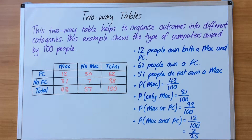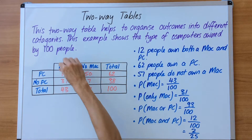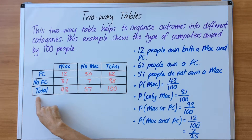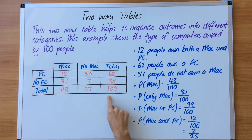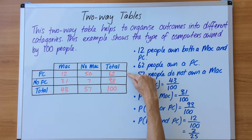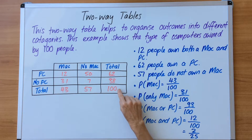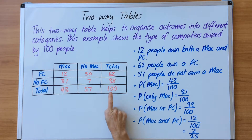We're now going to progress. This two-way table helps to organise outcomes into different categories. This example shows the type of computers owned by 100 people. The table is slightly different — we don't have the same top row or side column format. The totals work as follows: 43 and 57 add to 100, and 62 and 38 also add to 100. The total of all people — 100 — will always appear in the bottom right-hand corner.